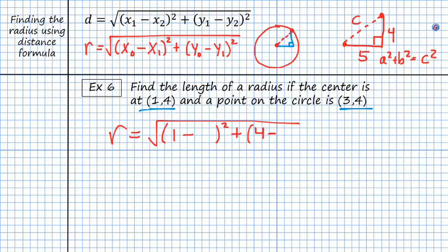Alright so 1 minus 3, so my point the x value is 3 and the y value is 4, so 4 minus 4 squared. And so we get r is equal to the square root of 1 minus 3 is negative 2, so this would be negative 2 squared plus 0, or r is equal to the square root of negative 2 squared, or r is equal to the square root of 4.